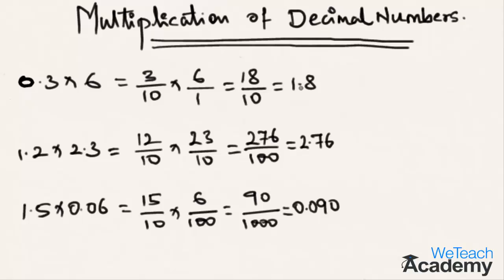In the second example, there are two digits after the decimal points, so in the result the decimal point is also before two places from the left. In the same way, in the third example, the number of digits after decimal points is three, so in the result the decimal point is before three digits from the left.